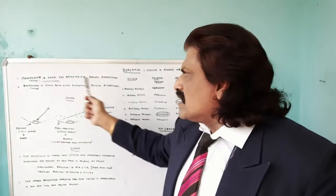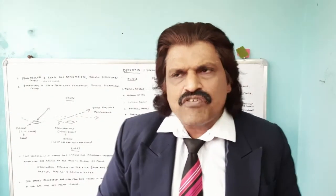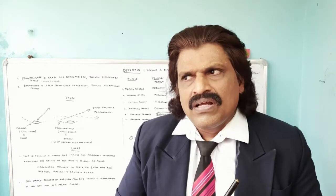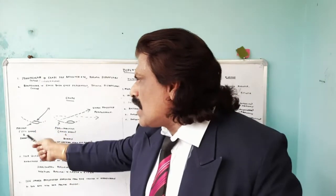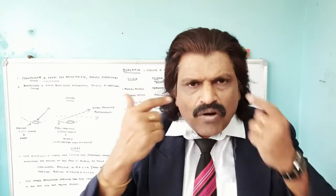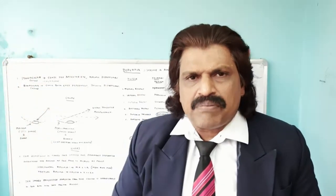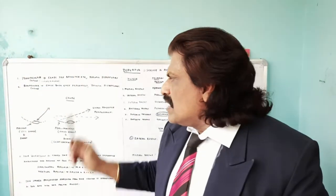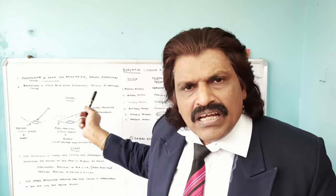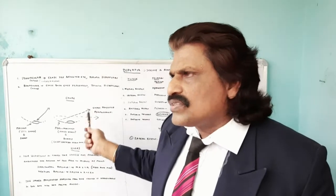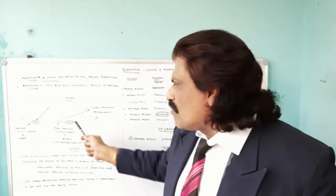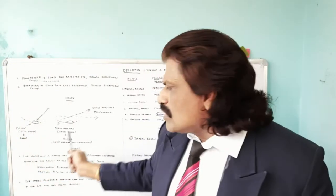To understand the causes and reasons for binocular diplopia, we need to understand certain principles. The macula is the area of the highest visual acuity. When we look at an image, it falls on the macula of both eyes and therefore the image appears sharp and clear. But when one of the nerves of one eye is not functioning properly, the image does not fall exactly on the macula — it falls on the perimacular region.